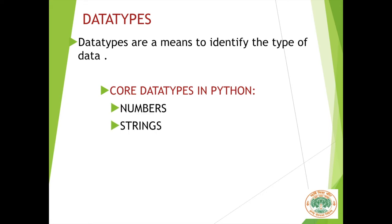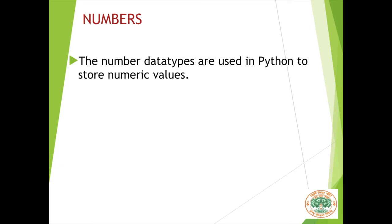The core data types in Python are numbers, strings, list, tuples, and finally dictionary. In this unit we are going to see an overview of all these data types. Let us begin with numbers. The number data types are used in Python to store numeric values. If our main aim is to store numeric values then we will use the numbers data type.